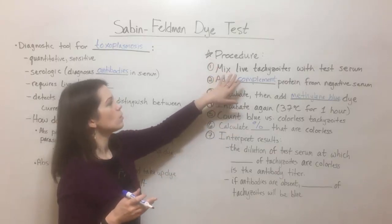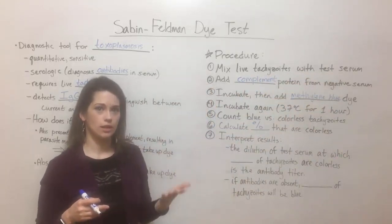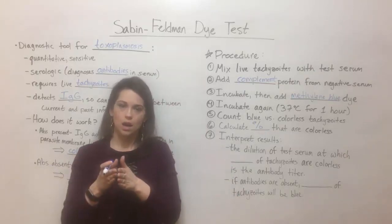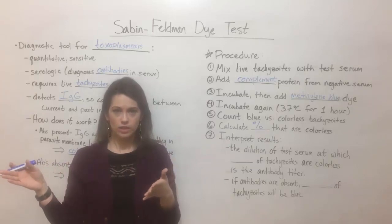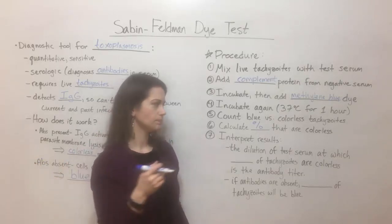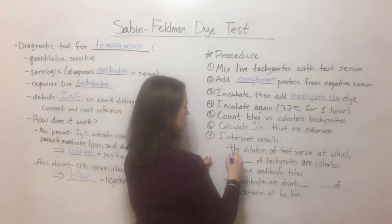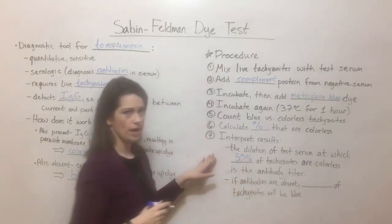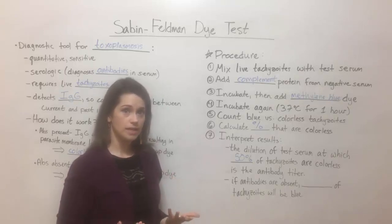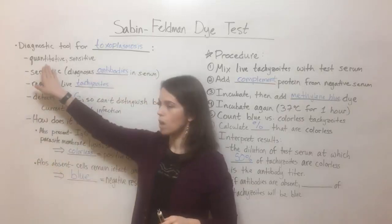When mixing the tachyzoites with the test serum, you typically do this multiple times with serial dilutions of the test serum — making it more and more dilute — so with each dilution, the amount of antibodies present gets less and less. The dilution of test serum at which 50% of the tachyzoites are colorless gives you the antibody titer for that sample. This tells you not just that antibodies are present, but how many are present, which is why this is called a quantitative technique.